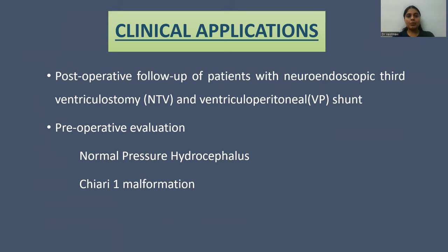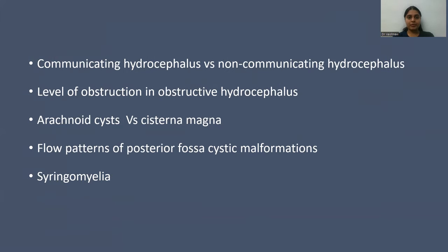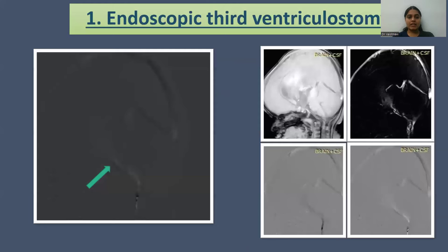Clinical applications include post-operative follow-up of patients with neuroendoscopic third ventriculostomy and ventriculoperitoneal shunting. Pre-operative evaluation includes normal pressure hydrocephalus and Chiari-1 malformation. Other indications are communicating versus non-communicating hydrocephalus, level of obstruction in obstructive hydrocephalus, arachnoid cysts versus cisterna magna, flow patterns of posterior fossa cystic mass formations, and syringomyelia.